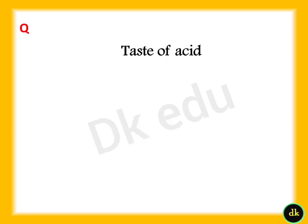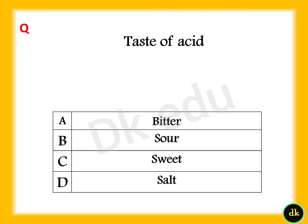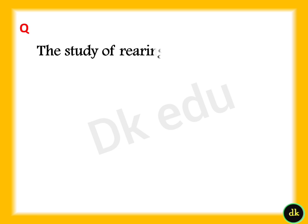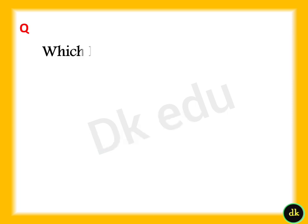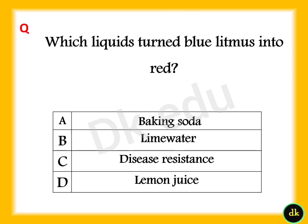Taste of acid — Answer: Option B, Sour. The study of rearing fishes is called — Answer: Option B, Pisciculture. Which liquid turns blue litmus into red? Answer: Option D, Lemon juice.